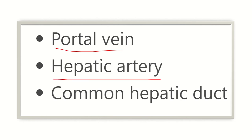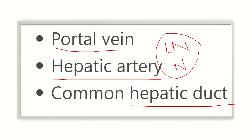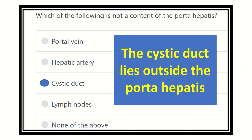The five main structures passing through the porta hepatis are: portal vein, hepatic artery, hepatic duct, lymph nodes, and nerve structures. Our final answer is the cystic duct, because the cystic duct lies outside the porta hepatis and is therefore not a content of the porta hepatis. Thank you all.